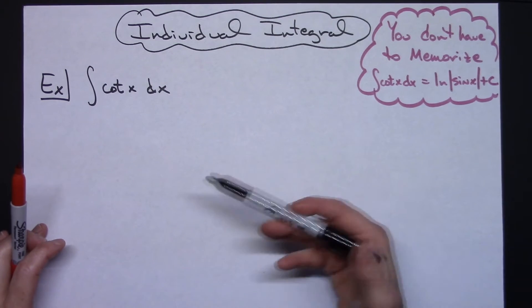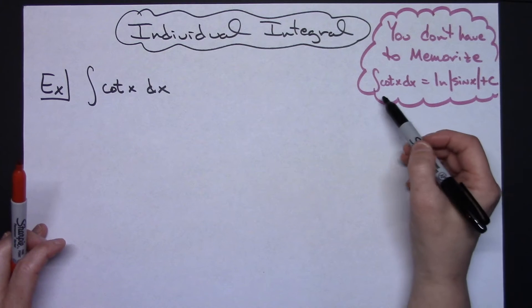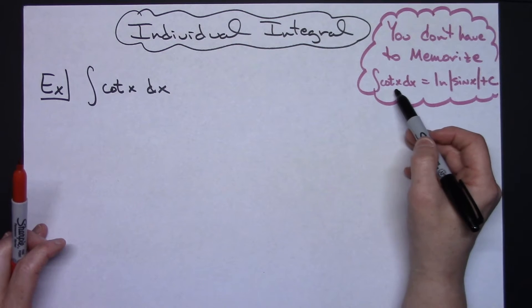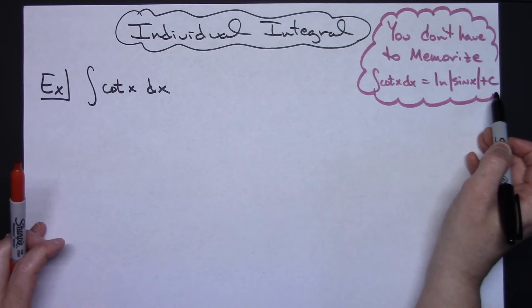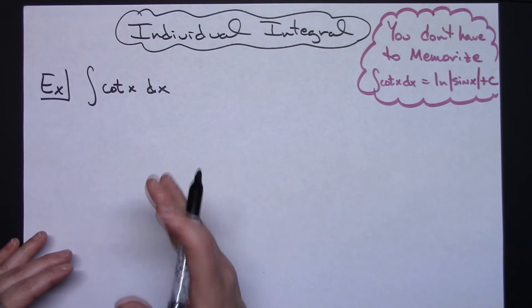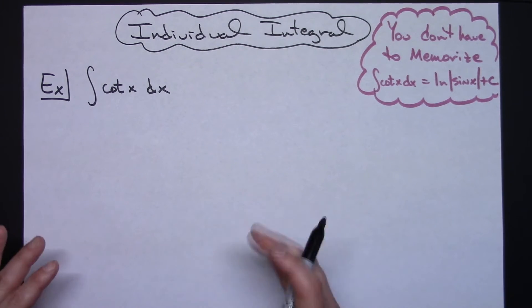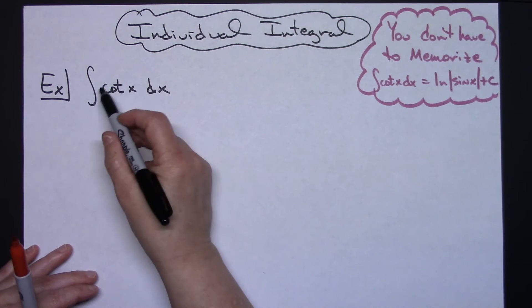Now I just want to point out that you don't actually have to memorize this. A lot of people do memorize it, though. The integral of cotangent of x dx is the natural log absolute value of sine x plus c. Now, that is standard. Many people memorize it, but it is a simple enough integral with a little basic u substitution that you would not have to memorize it if you did not want to.